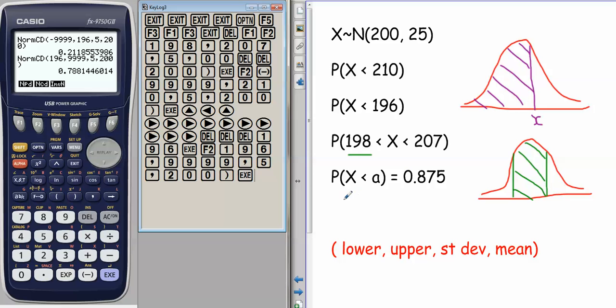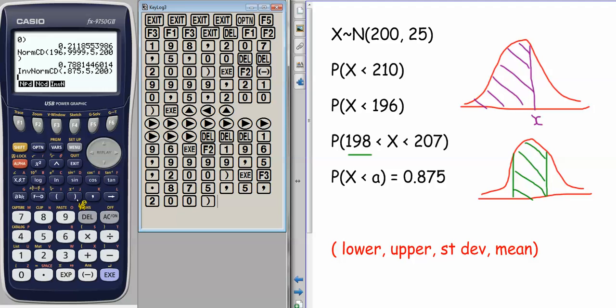The last bit, the inverse normal. If I want to say, if X is less than a value A, and that probability is 0.875, then what is A? Then we use the inverse normal. This is the same kind of setup, instead of lower and upper, we just put in the probability, so 0.875, and then the same thing, the standard deviation and the mean. And that gives us the value.